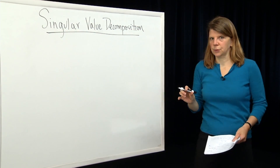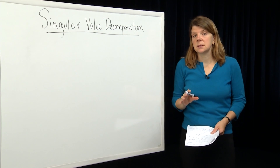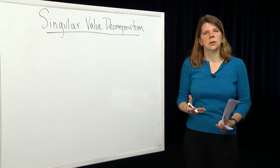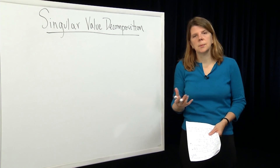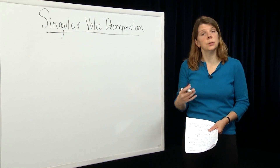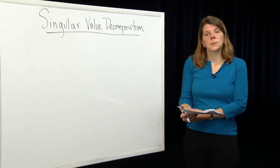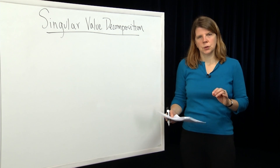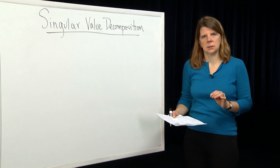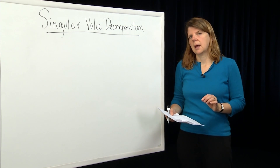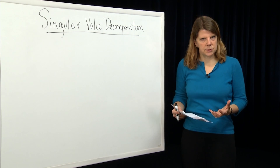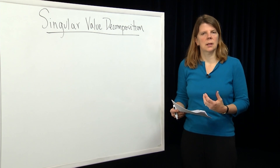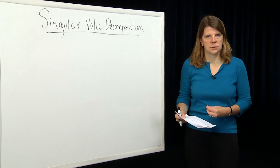In the last module, we defined what we meant by singular values of a matrix, based on our previous development of Hermitian matrices and unitary matrices. Now let's use this concept of singular values to present — we're not going to prove it in this module — but we're going to present a very useful decomposition of matrices, which will come up as we develop further modules into linear system theory.